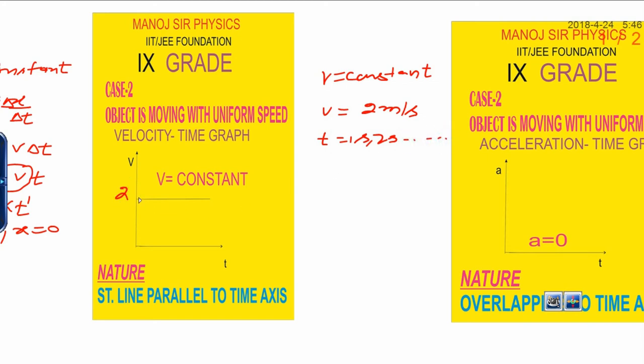By this way, you can see here it is fixed at 2 meters per second, but time is continuously changing. Because speed is constant, you will get the same speed in all intervals of time. That is why the graph is a straight line parallel to the time axis.